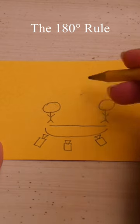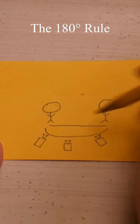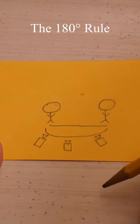If you were to place the camera on the other side of the line, the characters would appear to have switched places. The 180 rule keeps your viewers from being confused by knowing where your characters are placed.